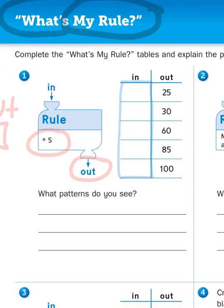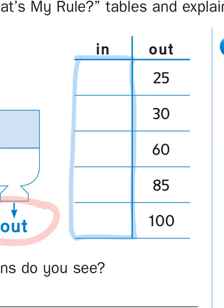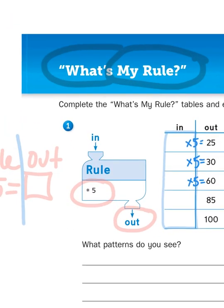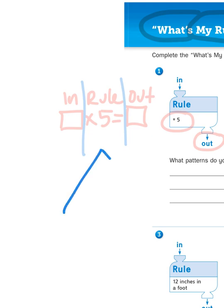So if I wanted to solve these problems, I would have to take some number and multiply them by 5 to get my output. Some number times 5 gives me 25, some number times 5 gives me 30, some number times 5 gives me 60, and so on. So what do I do with a multiplication problem with a missing factor? Well, this is where we utilize our fact family triangles.